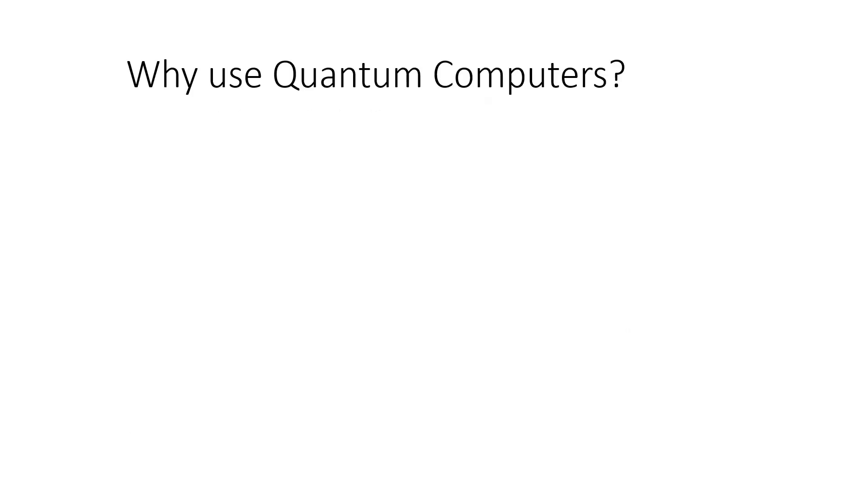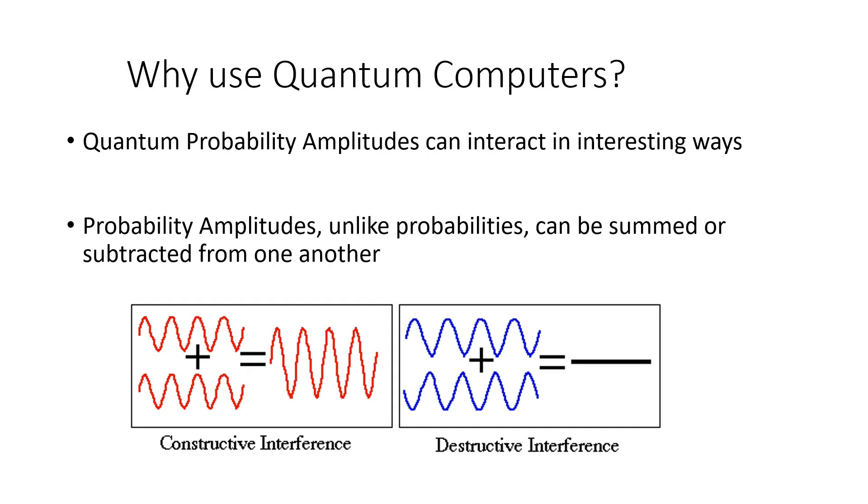Why use quantum computers? Quantum probability amplitudes can interact in interesting ways. Probability amplitudes, unlike probabilities, can be summed or subtracted from one another. This can be seen in physics in the constructive and destructive interference of waves.